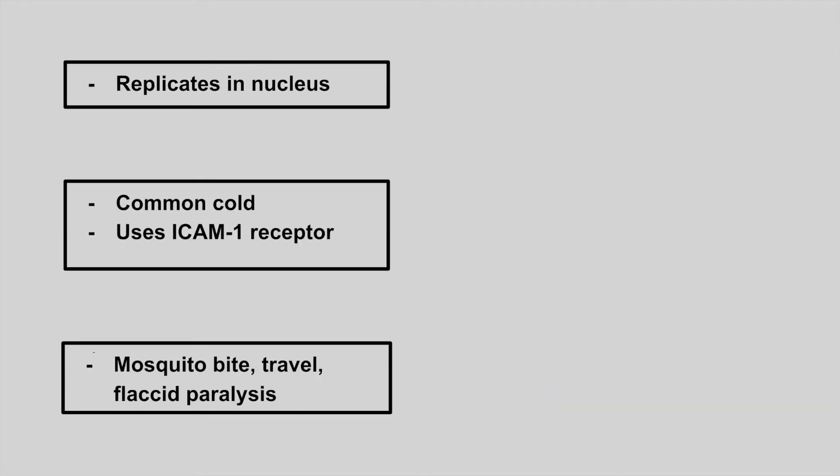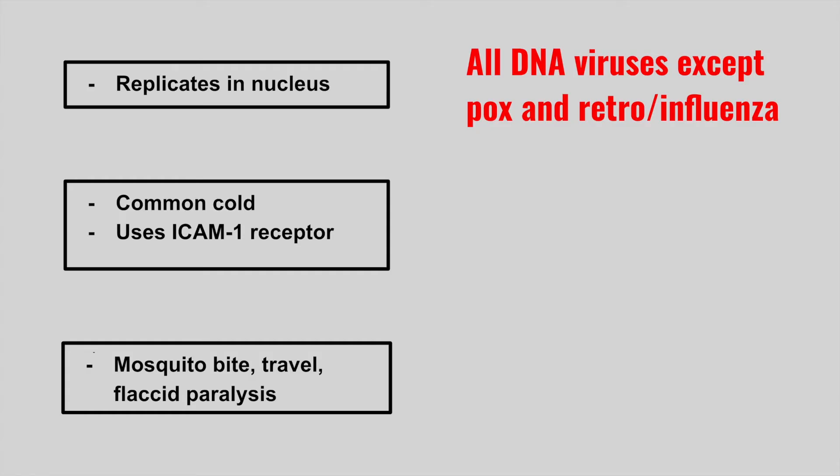Now we want to figure out which viruses replicate in the nucleus. All DNA viruses except for poxvirus replicate in the nucleus, as well as the RNA viruses retrovirus and influenza, which also replicate in the nucleus.